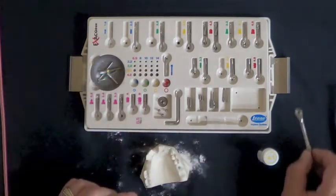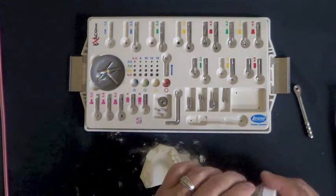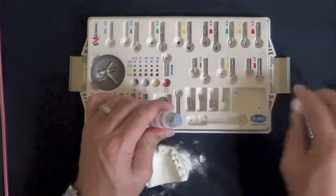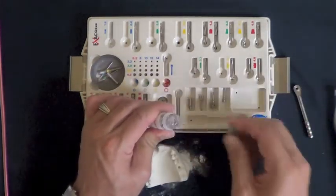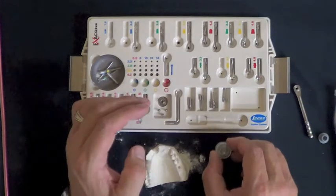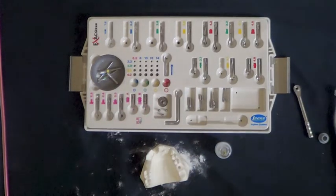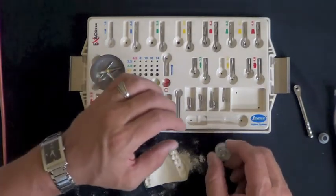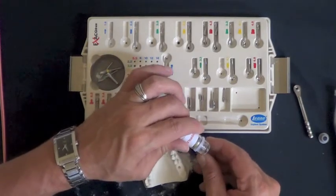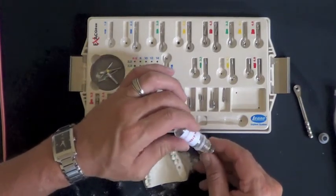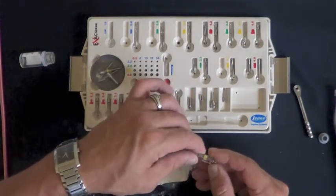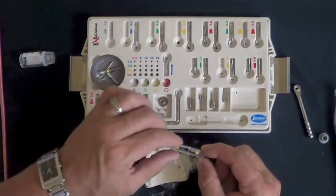All right, so we've done our osteotomy, we've tapped or threaded the site, and the next step then would be to take the implant, remove it from the packaging, reduce the rotation of the motor down to around 25 RPMs. Decide how you're going to place the implant, and the implant can be placed in several ways.